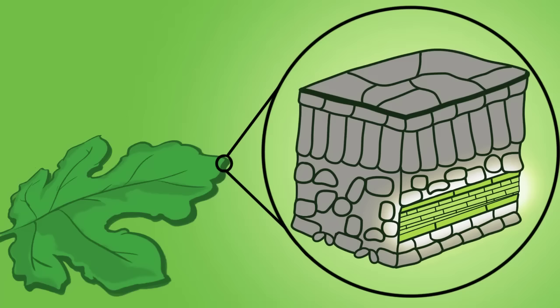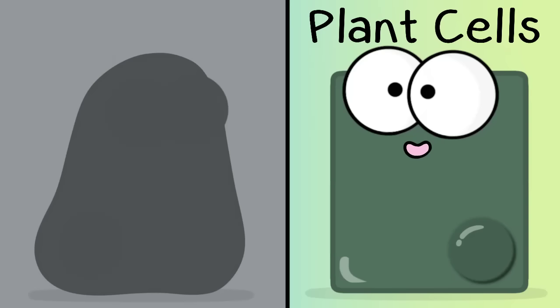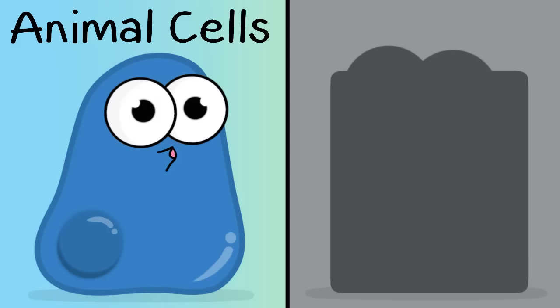This vein here contains the xylem and the phloem. We talk about these vessels in another clip, but the cells that make up these vessels are specialized for transporting water in the xylem or products from photosynthesis in the phloem. Okay, so we just saw a few examples of specialized plant cells. Let's take a look at specialized animal cells.